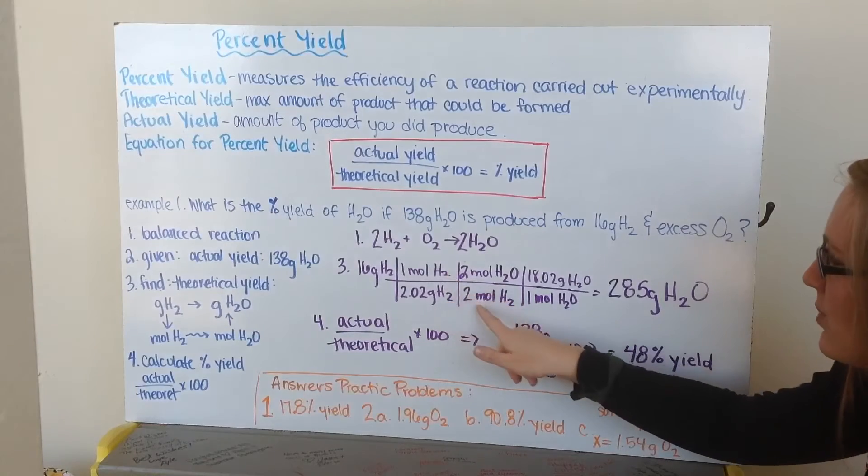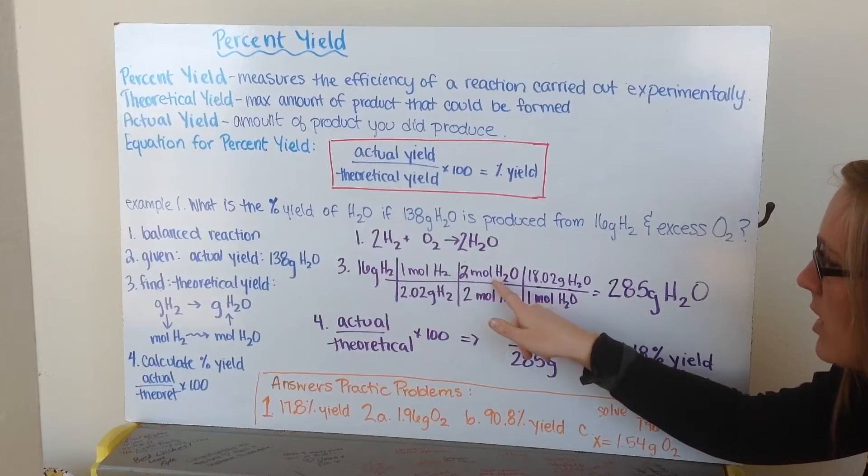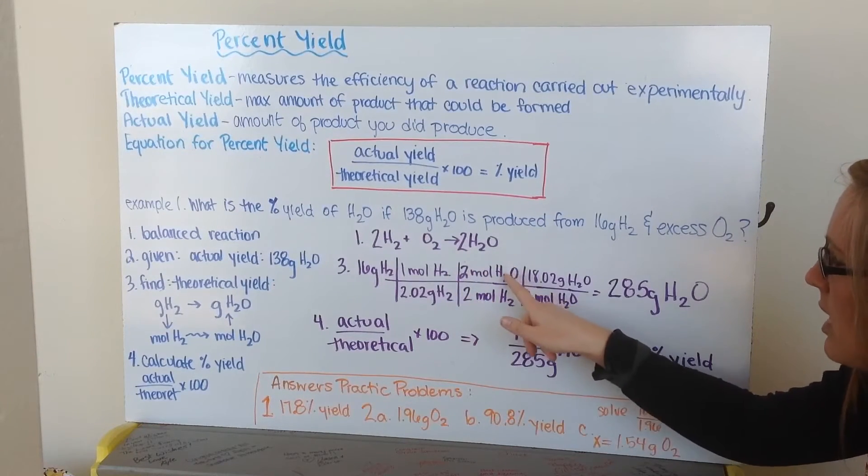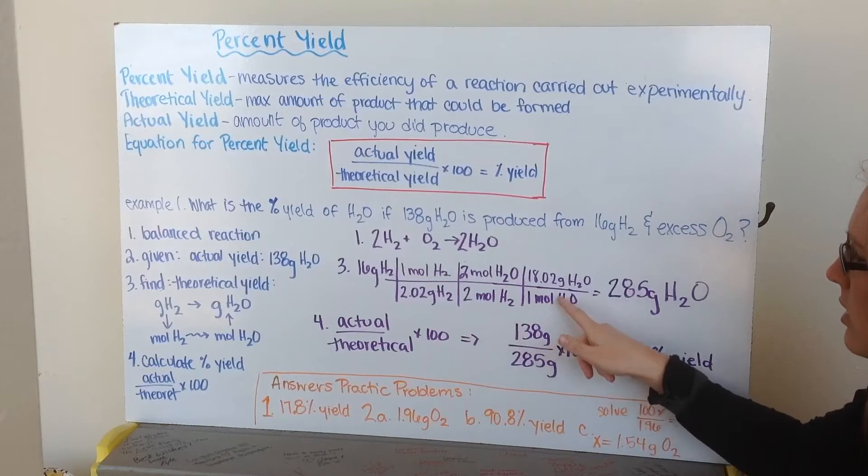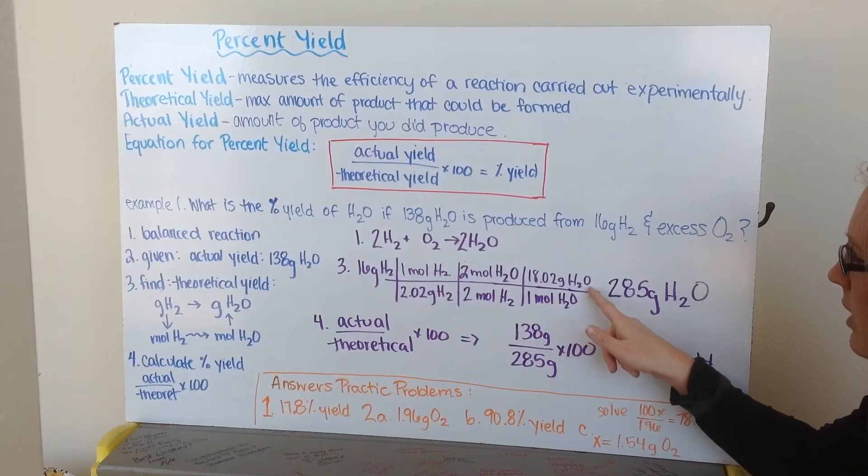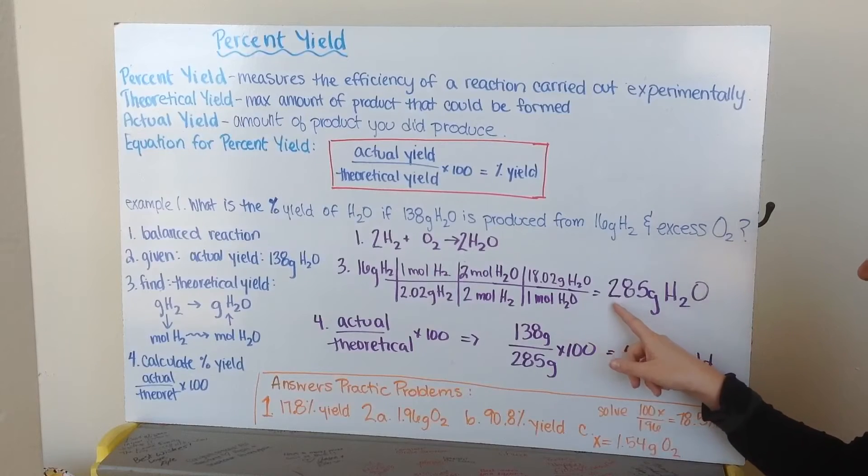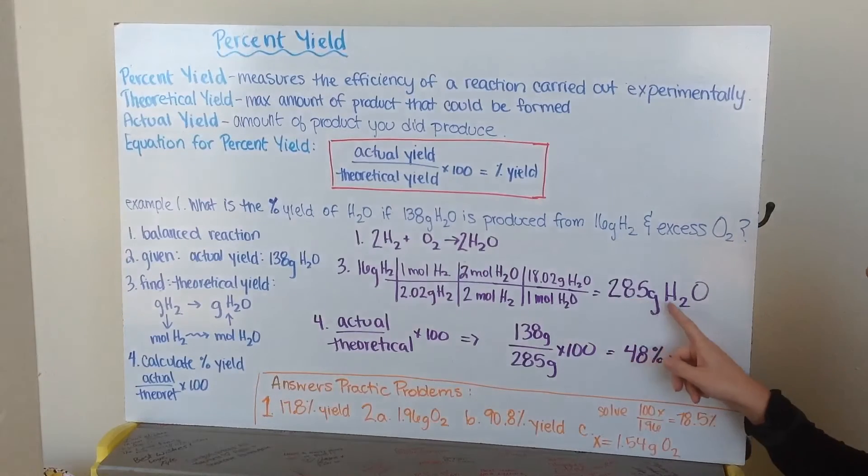And I convert to moles of hydrogen using my molar mass. From moles of hydrogen, I convert to moles of water using my mole-to-mole ratio. And then from moles of water, I go to grams of water using my molar mass of water. Here, I find out that I should have made 285 grams of water.